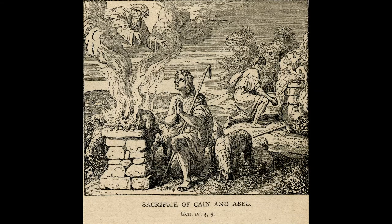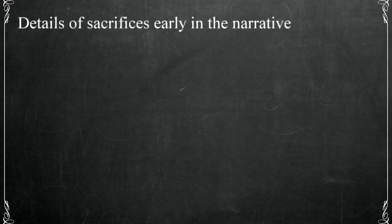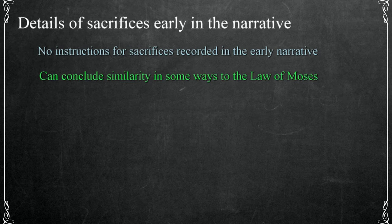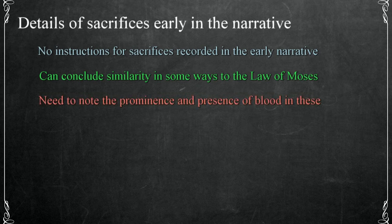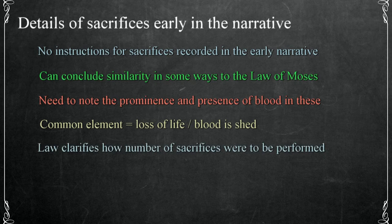Although there isn't a record in the patriarchal dispensation of God's explicit command to make such offerings, it's logical to conclude the Lord had imparted these instructions to the patriarchs. As we've seen, the practice is presented in the story of Cain and Abel in Genesis chapter 4. Moving forward in the text, those who are faithful to God also made such offerings: Noah in Genesis 8:20, Abraham who built an altar to the Lord in Genesis 12:7, and Job in Job chapter 1. The common element in all sacrifices is that the life of the animal is taken and the blood is shed.